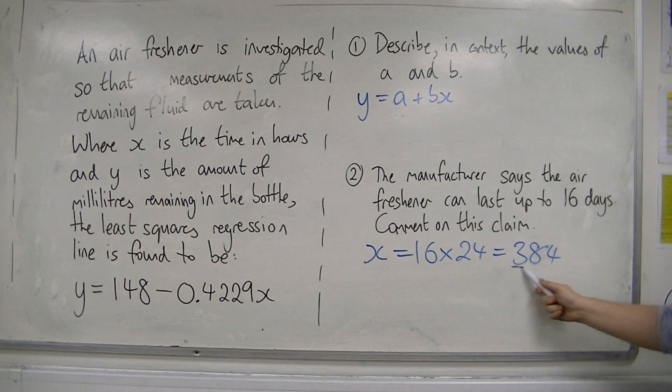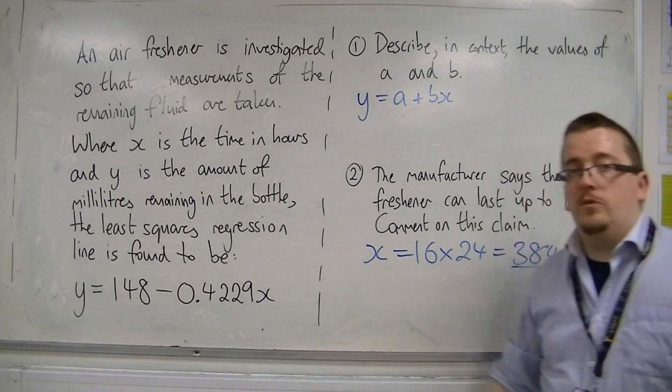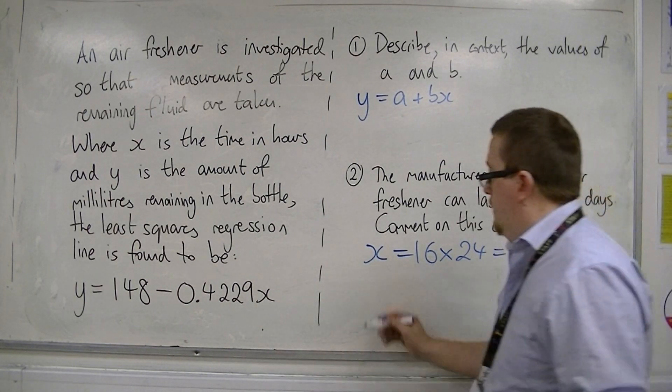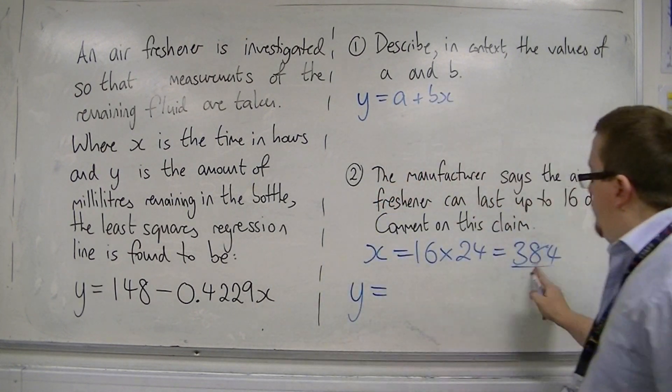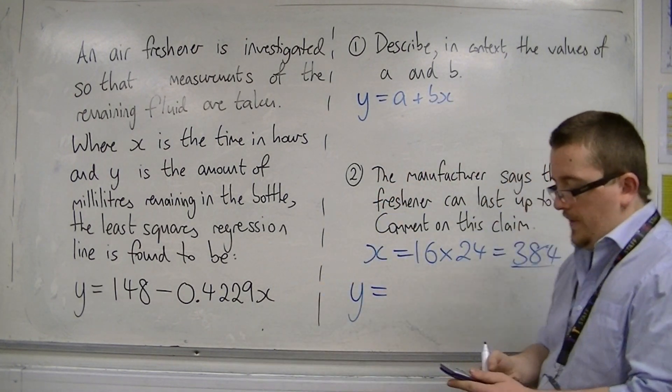So when I substitute 384 into this, I get 148 - 0.4229 × 384.